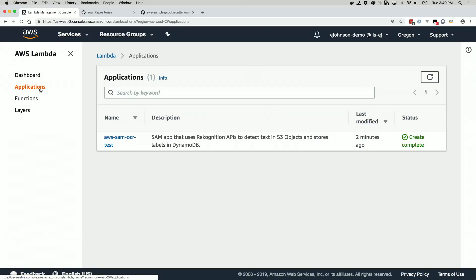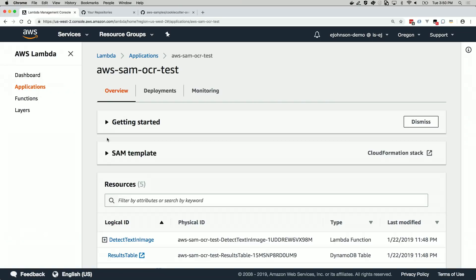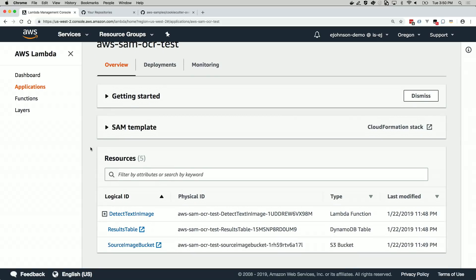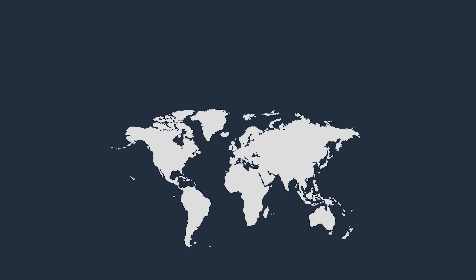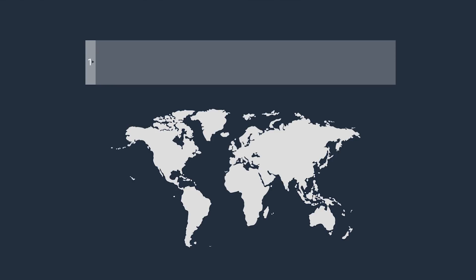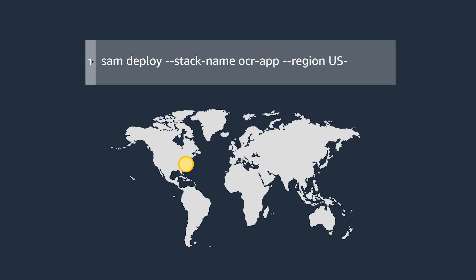On the Lambda console, you can see a list of all your serverless applications. Drilling deeper into AWS SAM OCR test — the one we just deployed — we can see a list of all the resources that got deployed. Here's where you can see a benefit of creating a template to define your infrastructure. You can deploy the same stack in another region or another account with just one command. For instance, once you're done testing the app and want to roll the changes out to production, you can run the SAM deploy command with just a change to the stack name.